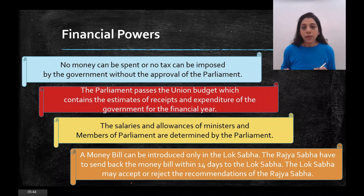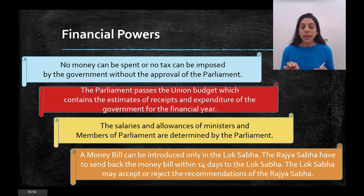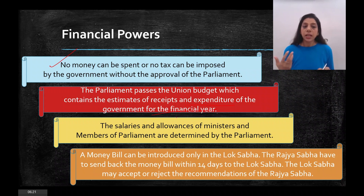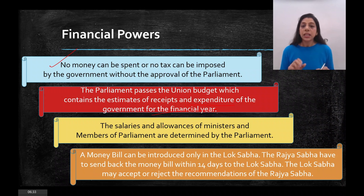Then come the financial powers. No money can be spent or no tax can be imposed without the approval of Parliament. All taxes and budget funds cannot be used without being passed and approved by Parliament. Parliament passes the Union Budget — it has a major role in deciding where and how much money is spent. Parliament also decides the salaries and allowances of ministers and members of Parliament.